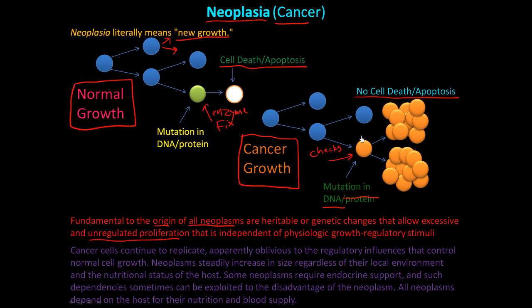Cancer cells continue to replicate obliviously to the regulatory influences that control normal cell growth. In normal tissue, adjacent cells send feedback to a cell saying, 'Let's stop growing, we don't need to divide, we're getting too crowded.' But cancer cells don't care — they just keep replicating, even if they're crowding out all the other cells. There's some kind of communication loss and inhibitory signal loss in these cancer cells, and so neoplasms steadily increase in size regardless of their local environment.